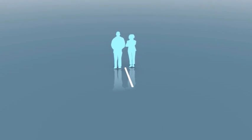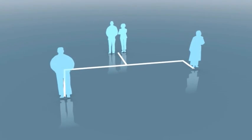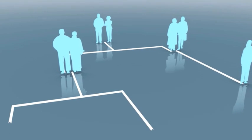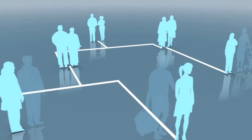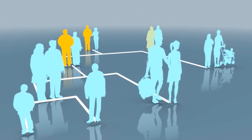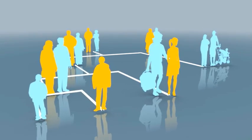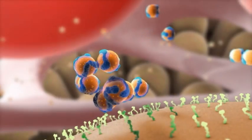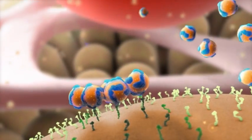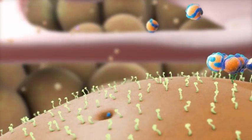Familial hypercholesterolemia, or FH, is a genetic disorder characterized by greatly increased LDL levels and a family history of premature atherosclerosis. Normally, LDL receptors on liver cells help clear LDL particles from the bloodstream.